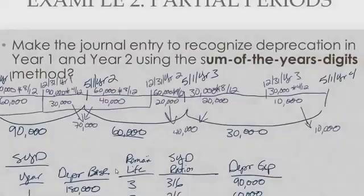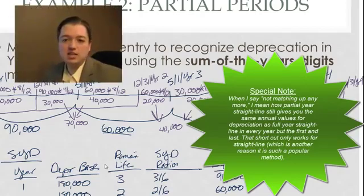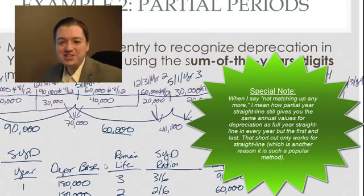Now before we do the journal entries, why don't you take a second and fill out the rest of this timeline and figure out what depreciation expense will be in year 3 and then in year 4. Here's the rest of our timeline, $40,000 for year 3, $10,000 for year 4. That's the way partial year depreciation works, and you'll notice it's not matching up anymore like it was under straight line, that just doesn't work for anything but straight line.